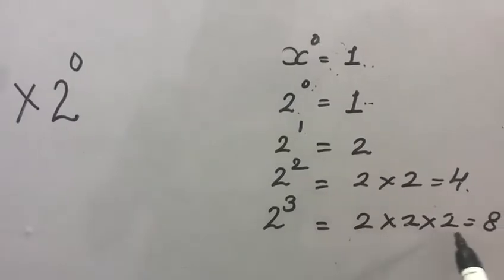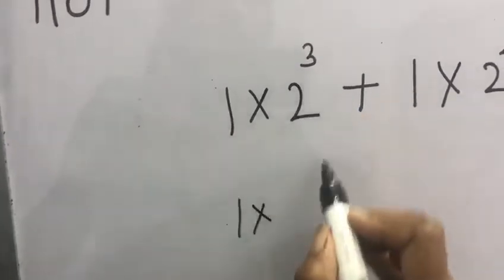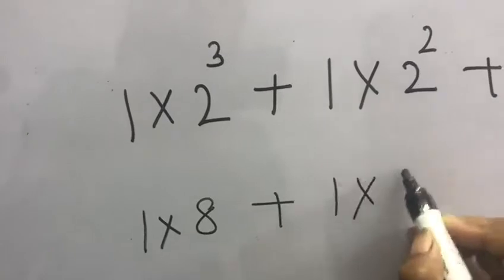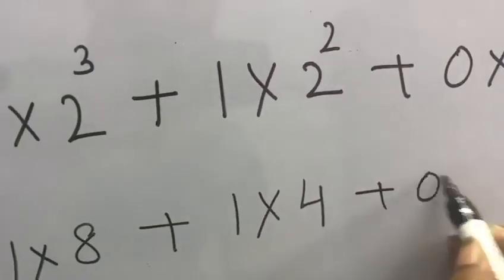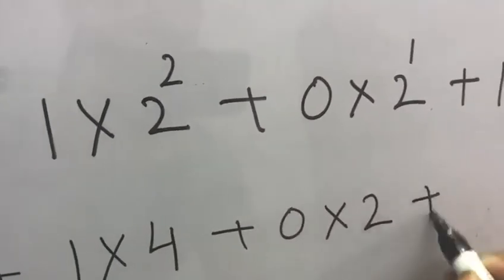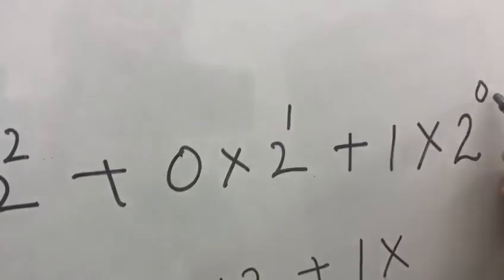And 2 to the power of 3 answer is 8. So here, 1 multiply 2 to the power of 3 is 8, plus 1 multiply 2 to the power of 2 is 4, plus 0 multiply 2 to the power of 1 is 2, plus 1 multiply 2 to the power of 0.